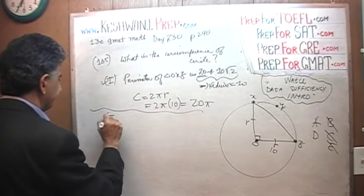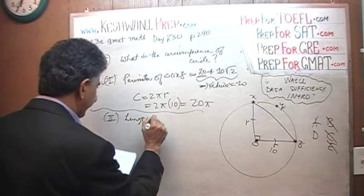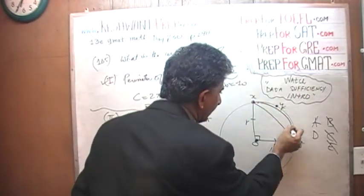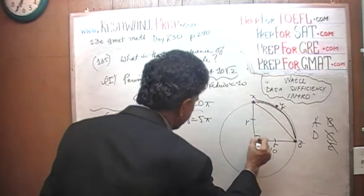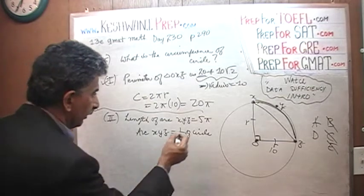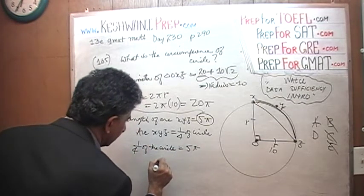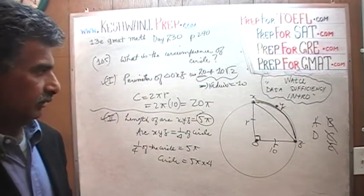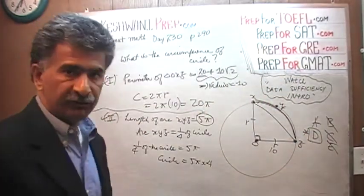Let's look at the second statement. They tell us the length of the arc XYZ equals five pi. Of course the length of the arc XYZ equals five pi, because the arc XYZ, because of the fact that this is 90 degrees, is actually one quarter of the circle. And if it's one quarter of the circle, we are told that one quarter of the circle is five pi. A quarter of the circle is five pi, therefore the whole circle would have to be five pi times four, same as before, twenty pi. So the second statement is also sufficient. Therefore the answer is D. And that was the end of that page. I will see you tomorrow, okay bye now.